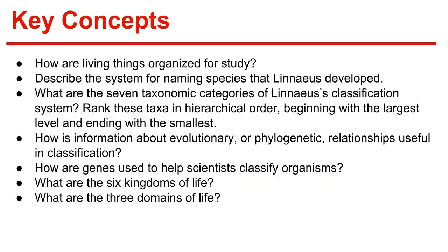Chapter 18 Key Concepts: How are living things organized for study? Describe the system for naming species that Linnaeus developed. What are the seven taxonomic categories of Linnaeus' classification system? Rank these taxa in hierarchical order, beginning with the largest level and ending with the smallest. How is information about evolutionary or phylogenetic relationships useful in classification? How are genes used to help scientists classify organisms? What are the six kingdoms of life? What are the three domains of life?